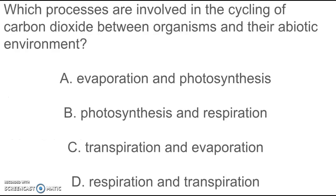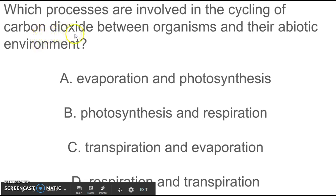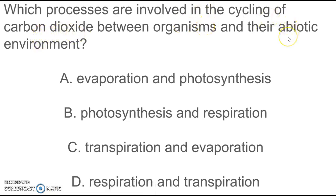This question says which processes are involved in the cycling of carbon dioxide between organisms and their abiotic environment. So this is a complicated question asking you about the carbon cycle: how does carbon cycle move from living things to non-living things? We said that the carbon cycle has two things: where carbon is absorbed and used by plants, and then how it is broken down and given off by animals. So the two parts would be photosynthesis and respiration.